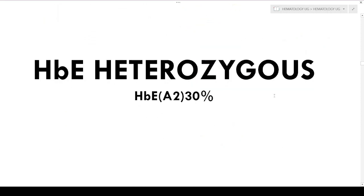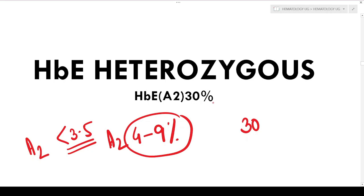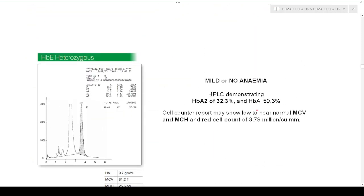Now we are going to see HbE heterozygous. Normally A2 levels are less than 3.5%; in thalassemia trait the range is 4 to 9%. But in HbE heterozygous, the average amount of HbE is approximately 30%. In the HPLC chart, HbE elutes at the same location as A2. So the A2 percentage in the HPLC will come very high — but it is not actually A2, it is the HbE levels. You can appreciate the A0, the very small F curve, and the A2 curve — which is actually HbE.